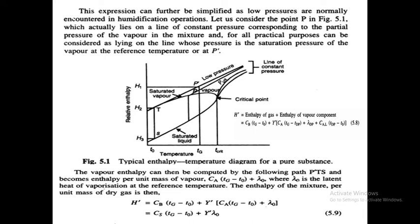This is the temperature-enthalpy diagram. Consider the point P, which actually lies on a line of constant pressure corresponding to the partial pressure of the vapor in the mixture. For practical purposes, it can be considered as lying on the line whose pressure is the saturation pressure of the vapor at the reference temperature T0. The vapor enthalpy can be calculated by the path P'-T-S, giving enthalpy per unit mass of vapor.